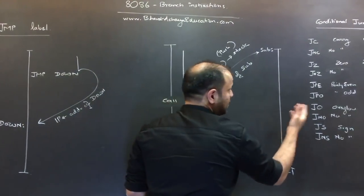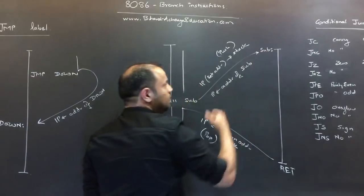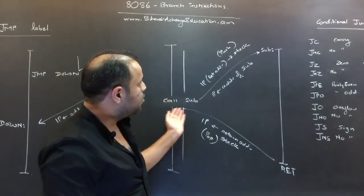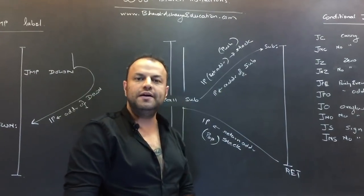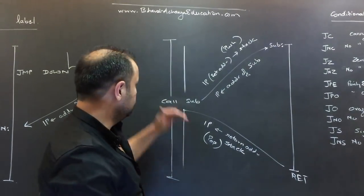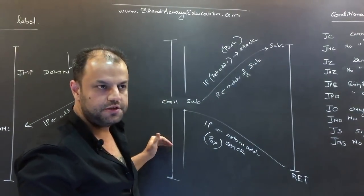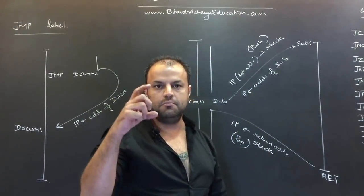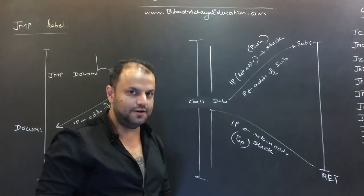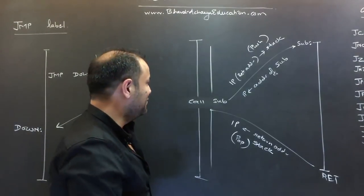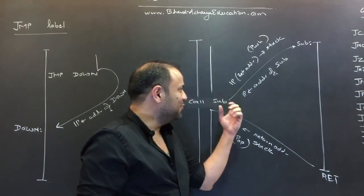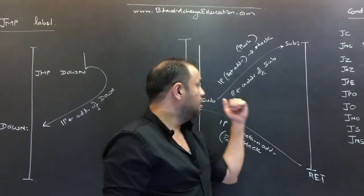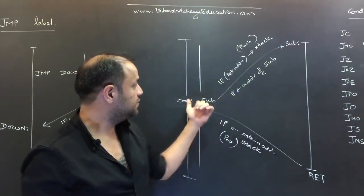Suppose there is a subroutine with the name 'sub' — it could be any name. You want to call that subroutine. Suppose it's a function to produce a delay, like traffic lights: you showed red, now you want to show green, but you need a delay for that. So you call a function — that function is your subroutine. The instruction used to invoke a subroutine is call.